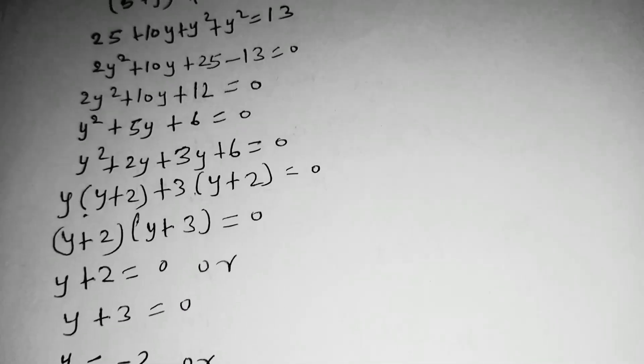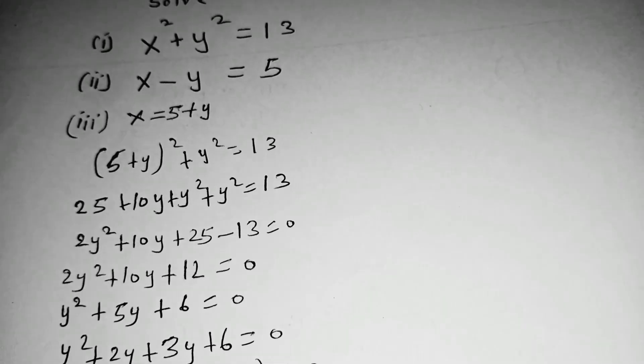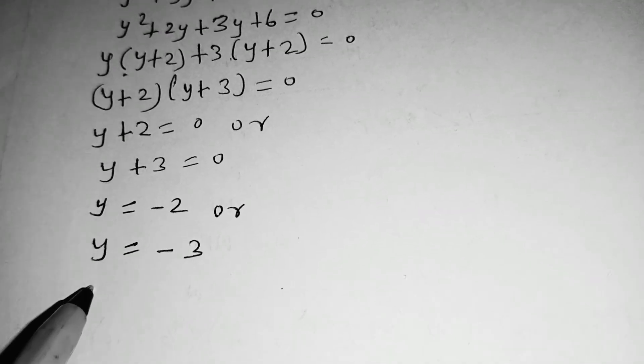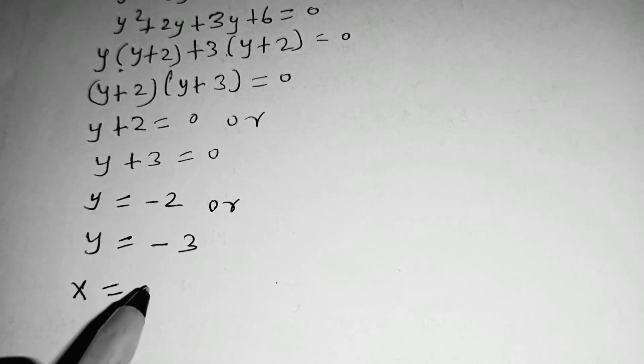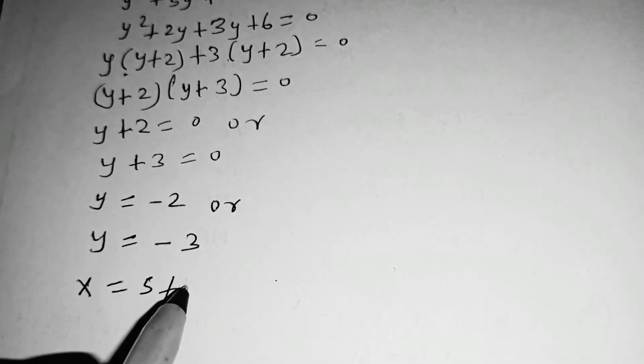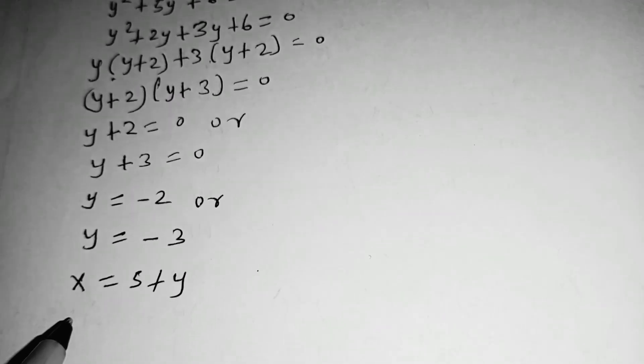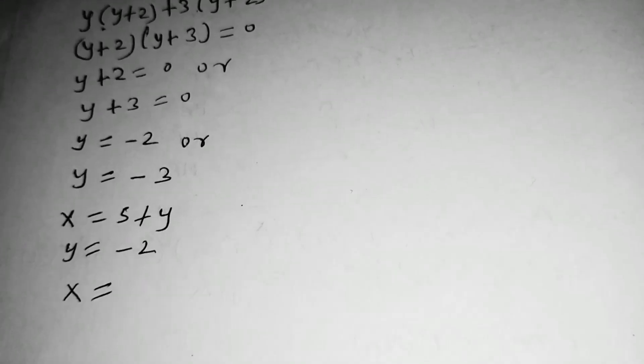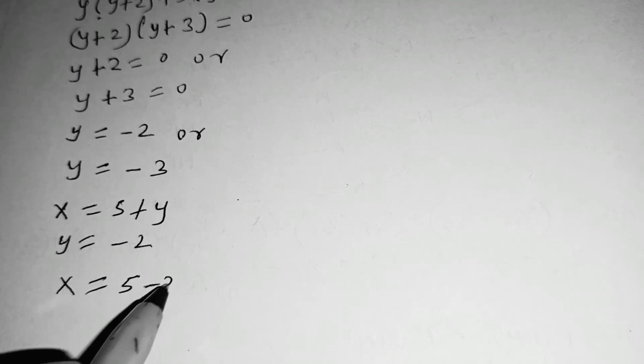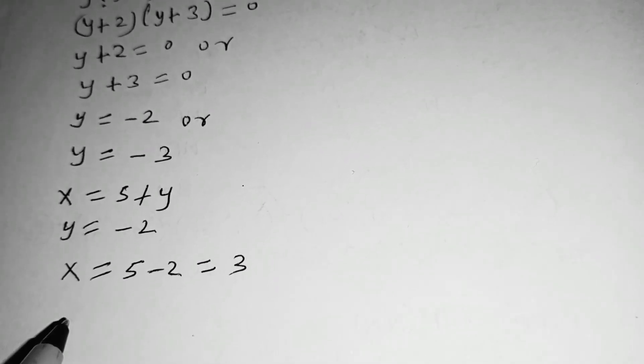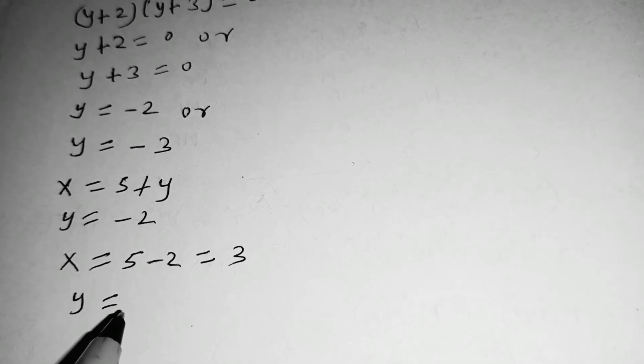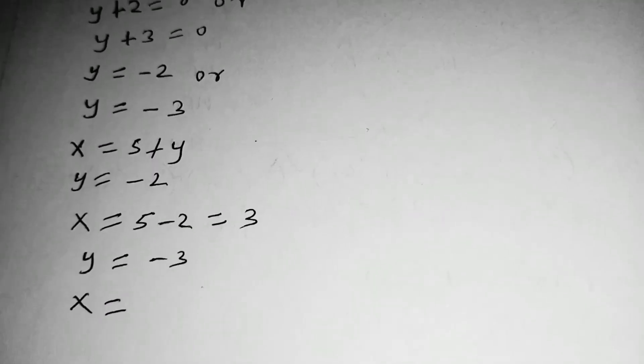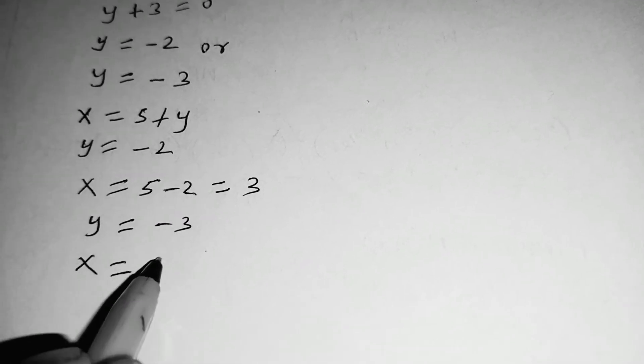We are written in our equation up here that in equation 3, we obtained that x is equal to 5 plus y. So when y is equal to negative 2, x will be equal to 5 minus 2, which is equal to 3. When y is equal to negative 3, x will be equal to 5 minus 3, which is equal to 2.